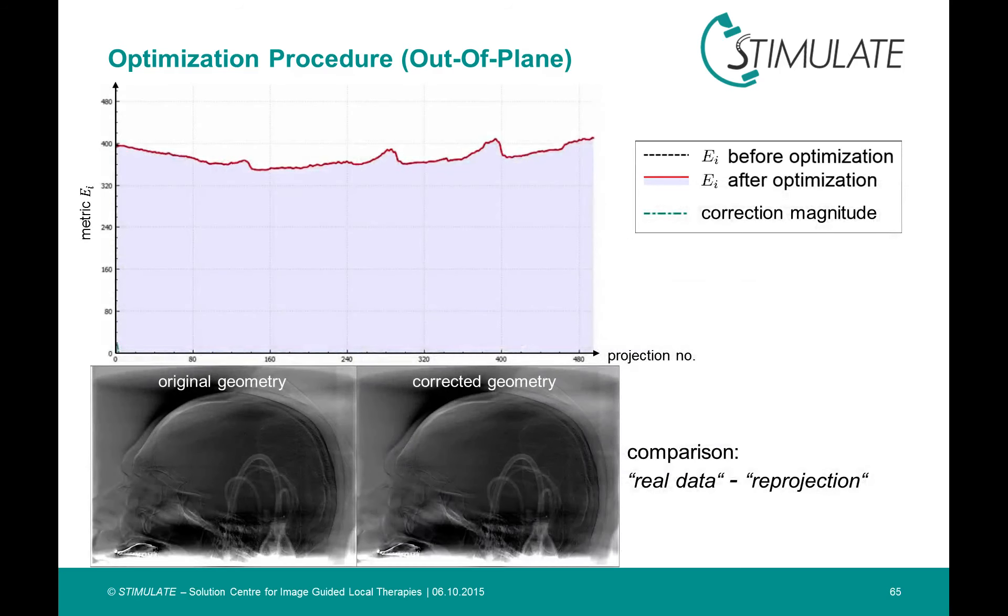On this slide, I want to show you the procedure of optimization more detailed. The plot shows the summarized consistency measure EI of each single angle, which we obtain by summarizing over the columns or the rows of the previous matrix.